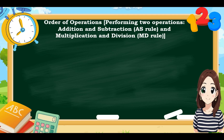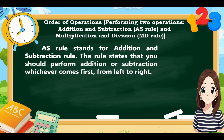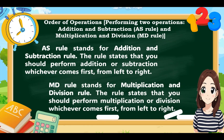Now let's move on to the order of operations. The AS rule stands for addition and subtraction. The rule states that you should perform addition or subtraction whichever comes first, from left to right. The MD rule stands for multiplication and division. The rule states that you should perform multiplication or division whichever comes first, from left to right.